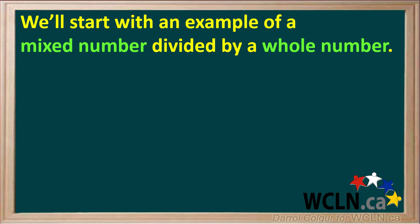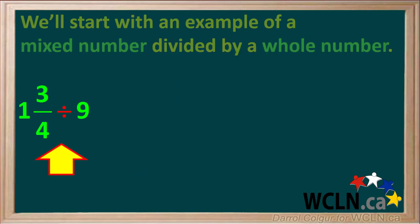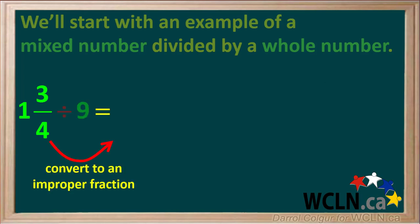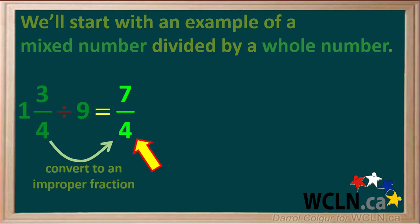Let's start with an example of a mixed number divided by a whole number. Here we have the mixed number one and three quarters divided by the whole number nine. We start by converting the mixed number one and three quarters to an improper fraction. The denominator is four, and the numerator is one times four plus three, which is equal to seven. So our improper fraction is seven over four.